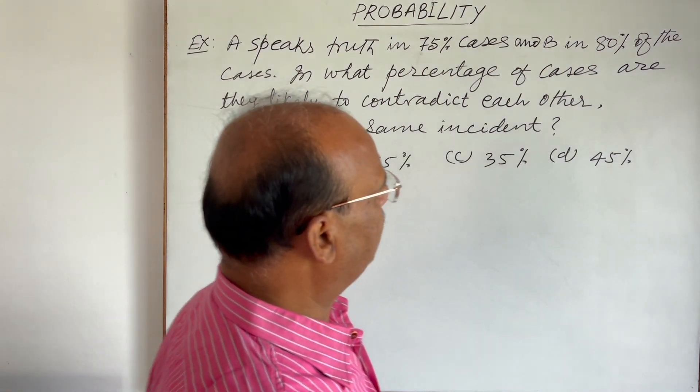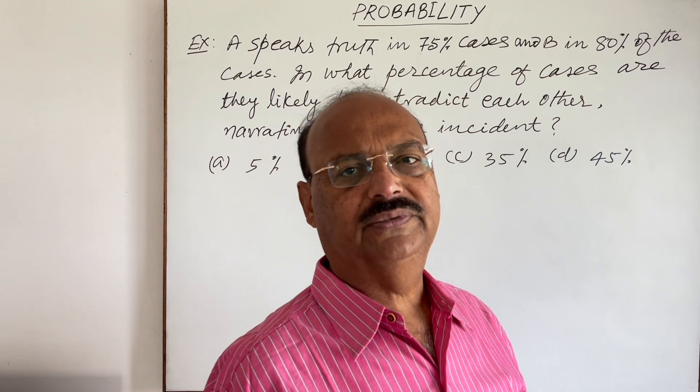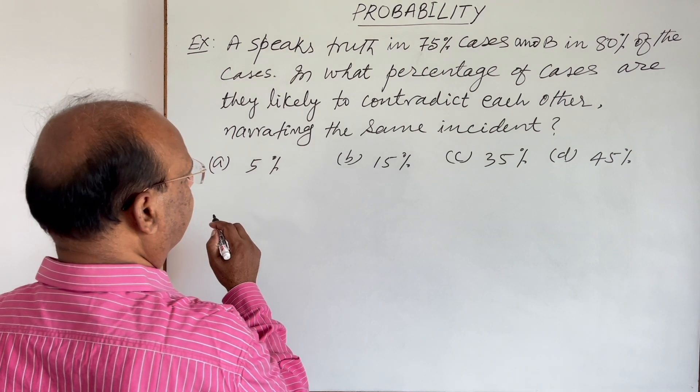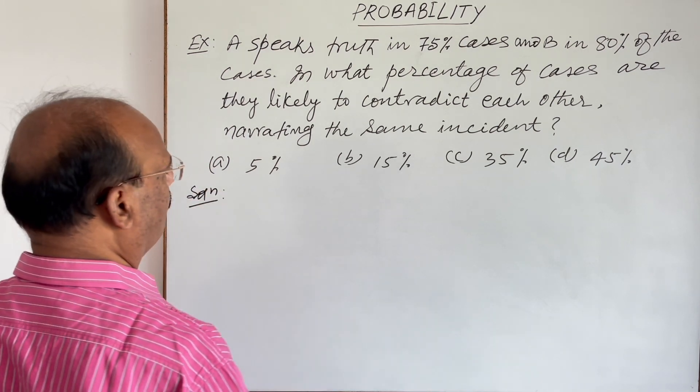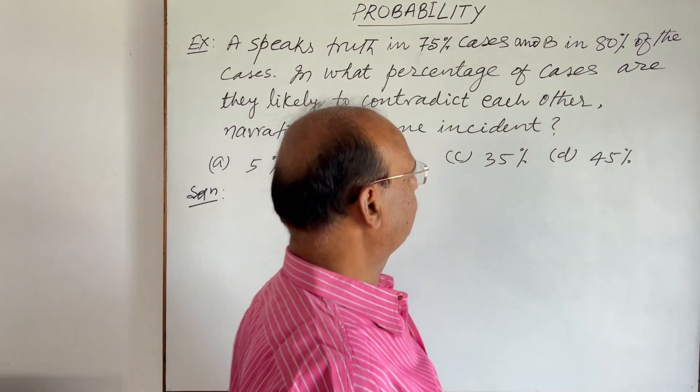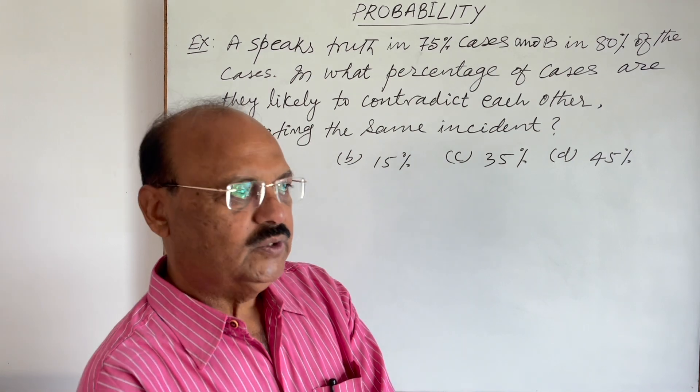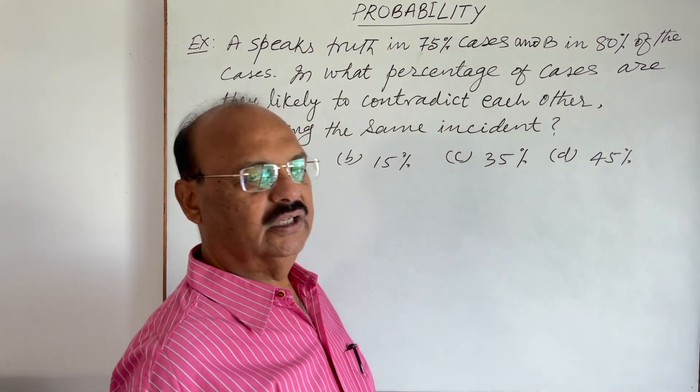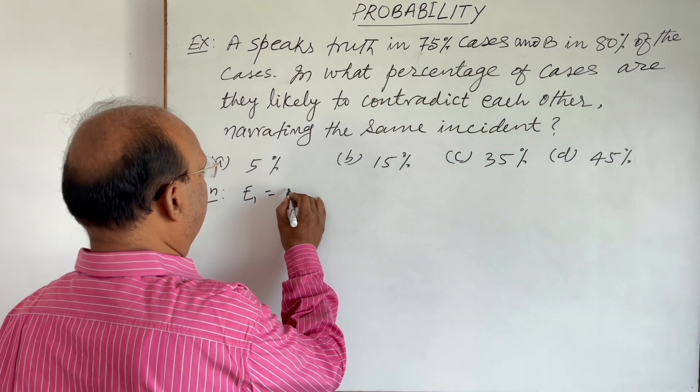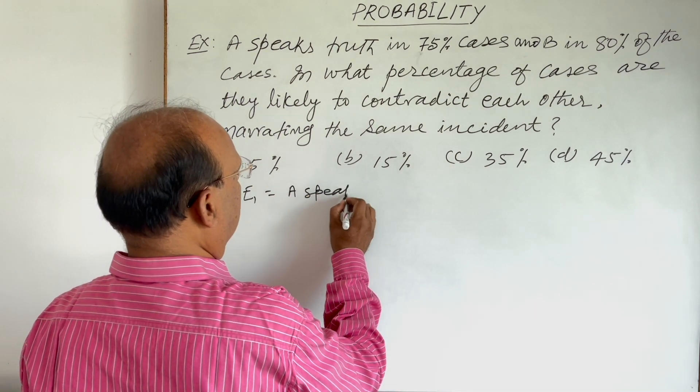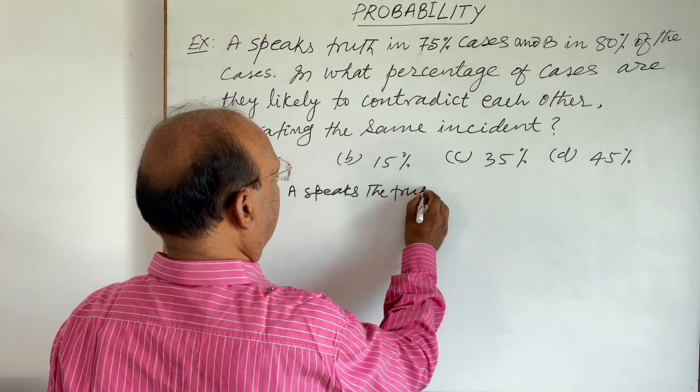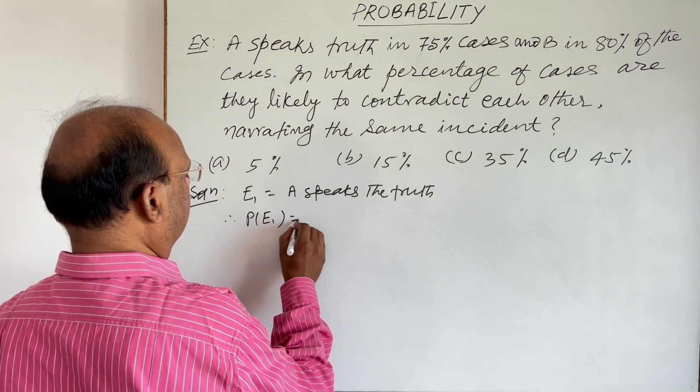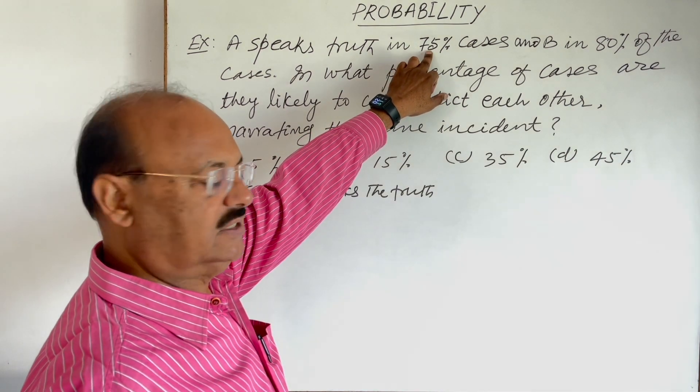So first of all, we need to find out sample space. Let us say that E₁ is the event when A speaks the truth. So therefore what is probability of E₁? 75% cases. This is already given.